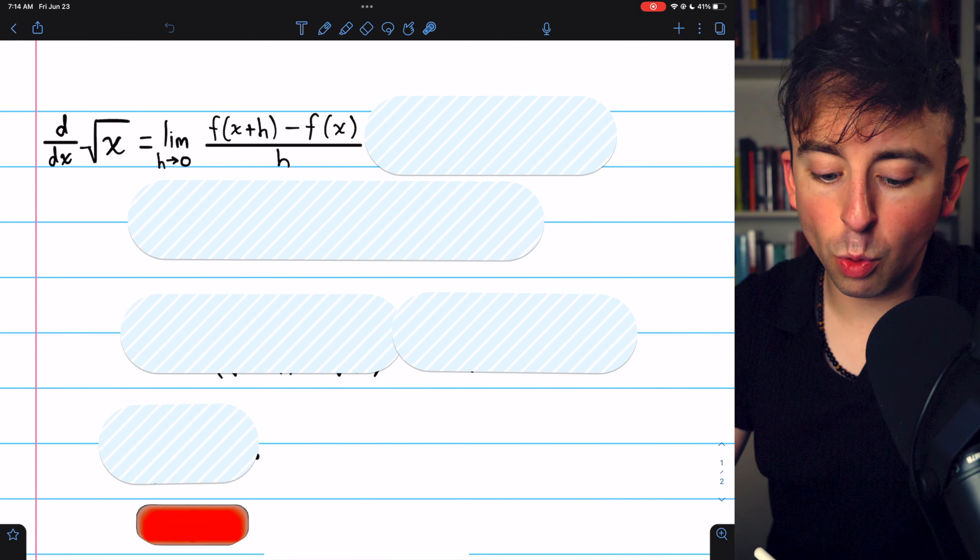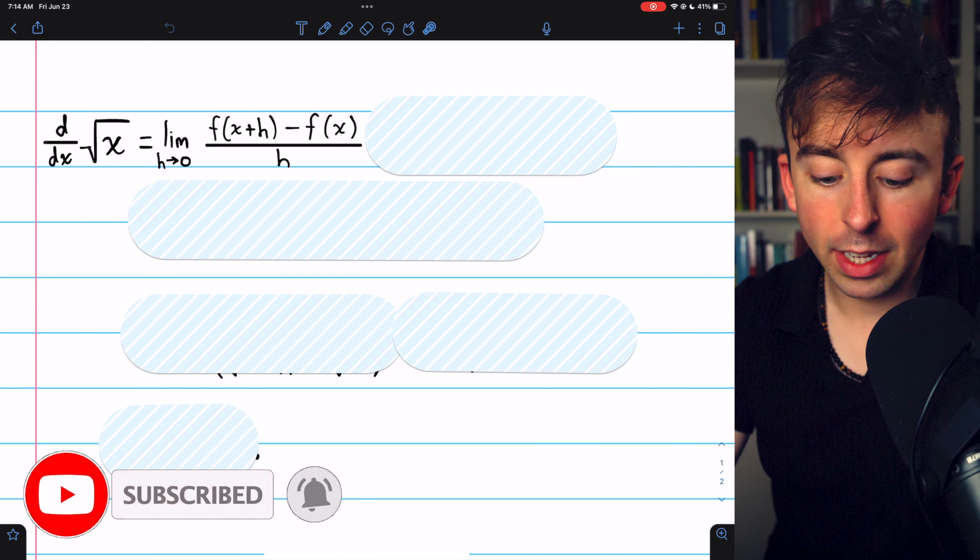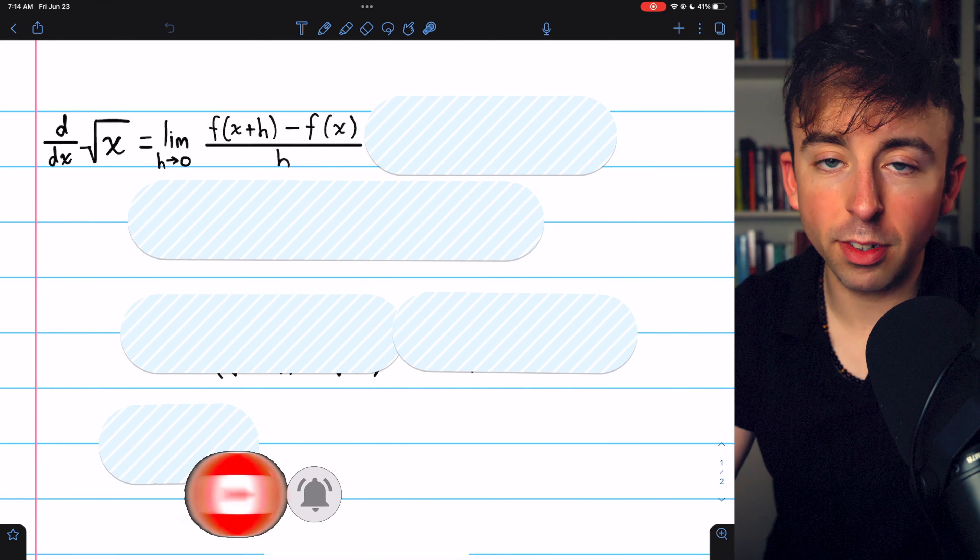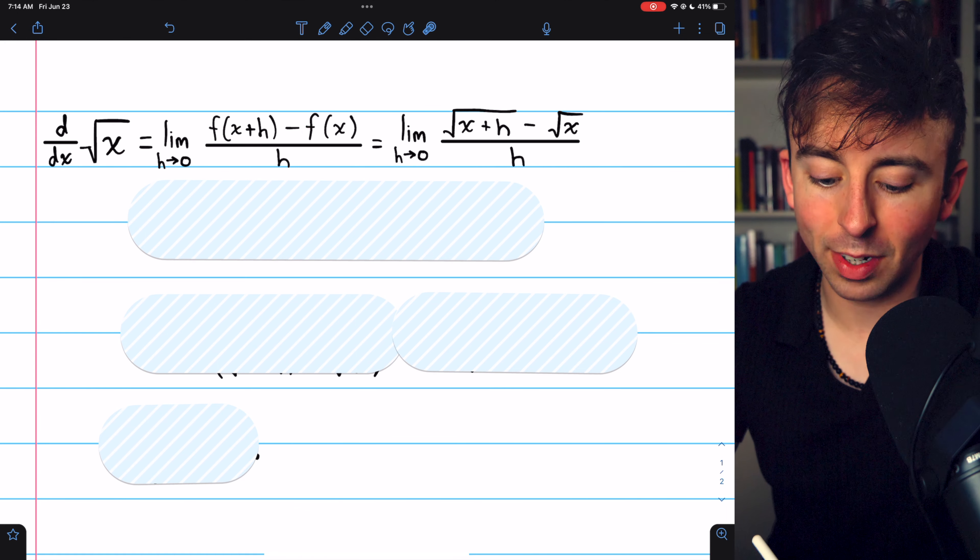Let's find the derivative of the square root of x using the limit definition of the derivative. So f of x here is just square root of x. We'll begin by plugging in root x into this definition.